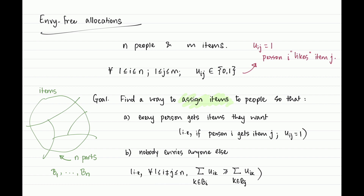By the way, it could be that the perspectives are sufficiently different that two people envy each other — in which case it would probably make sense for them to exchange bundles. But formally, we want an allocation satisfying two properties: on one hand it is non-wasteful, giving everybody something they like; on the other hand there is no envy in the system. Our goal is an FPT algorithm in the number of people n, achieved through the ILP toolkit.